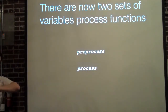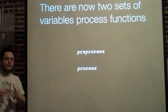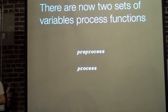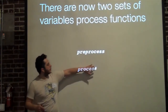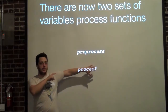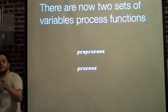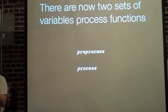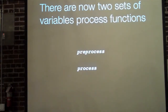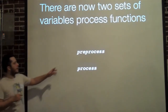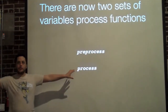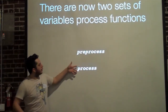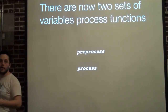There are now two sets of variable processing functions. A lot of us, if you're experienced with advanced theming, know about the pre-process functions. Pre-process functions allow you to affect things with code before they're even sent to the display, before they're even sent to render — so you can tweak variables, tweak some markup. Now there is a process stream of functions that actually fire after the pre-process functions have gone off.